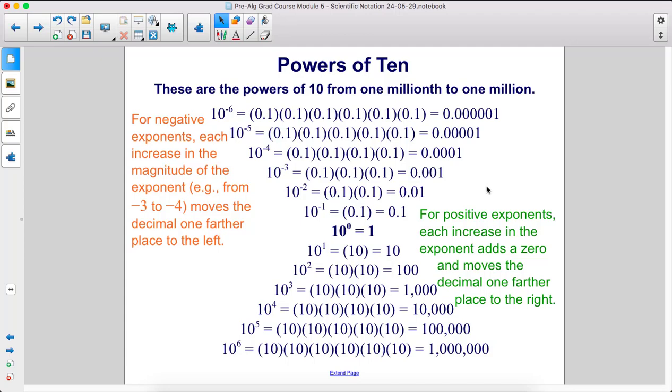For positive exponents, each increase in the exponent adds a zero and moves the decimal one farther place to the right.